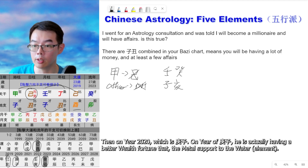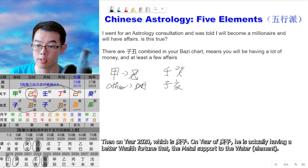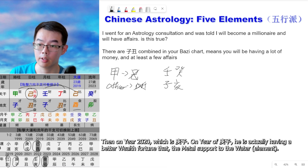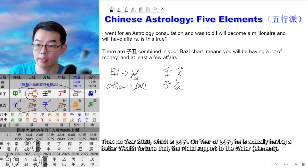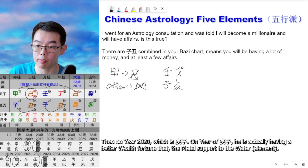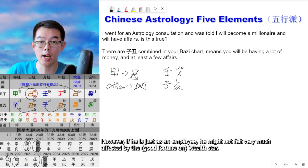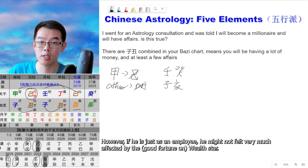On year 2020, which is Geng Zi, he is actually having a better wealth fortune, as metal supports water. However, if he is just an employee, he might not feel very much affected by the wealth star.